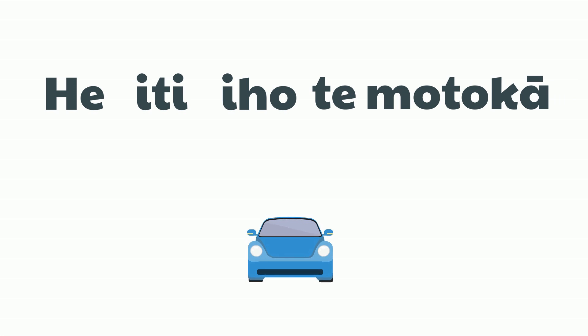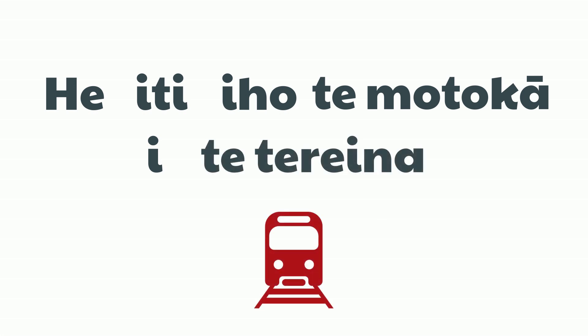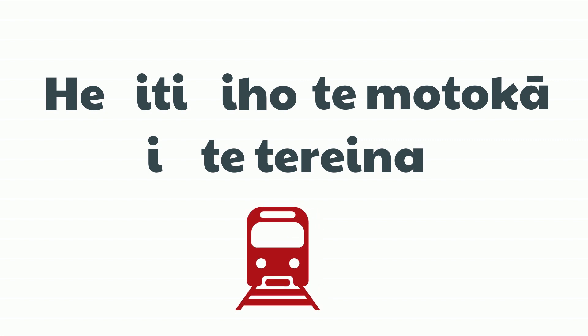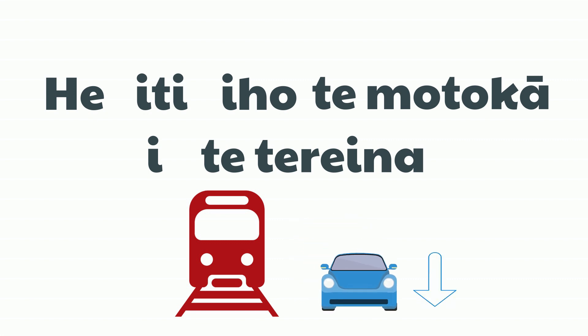To indicate what it's smaller than, we put the word i. At the end, we put the second thing — the train — compared to which the car is smaller. He iti iho te motokā i te terreina. The car is smaller than the train.